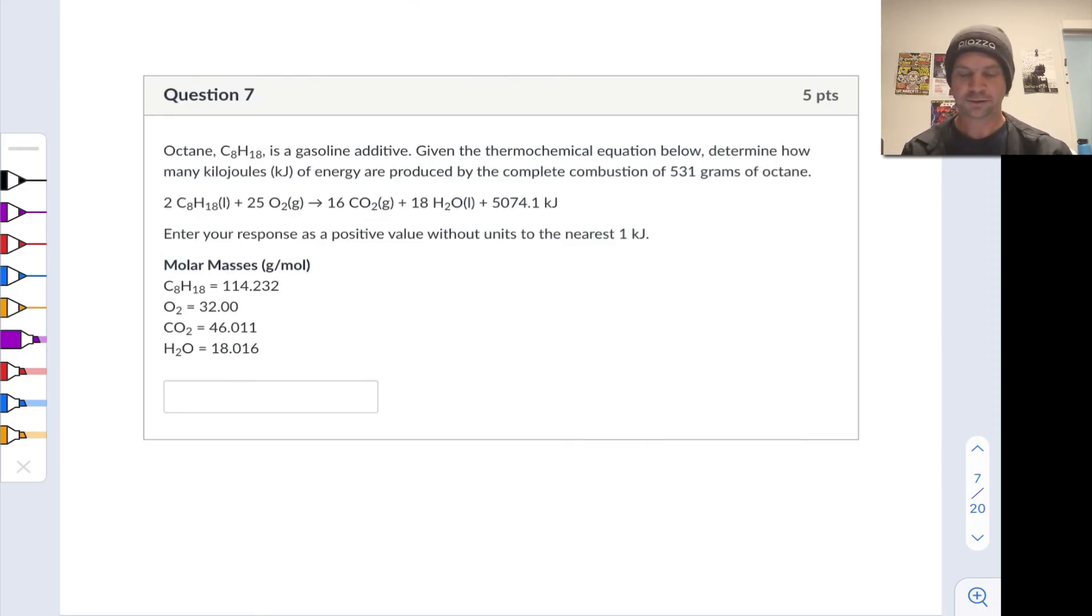In this question, we're asked to determine how many kilojoules of energy are released or produced when 531 grams of octane are combusted according to the thermochemical equation below. So it's all about thermochemical equations and applying heat as a kind of stoichiometric reactant or product, depending on whether the reaction is endo- or exothermic. Here, thinking about combustion, we're definitely dealing with an exothermic process, and so it's no surprise that the enthalpy change shows up on the product side.